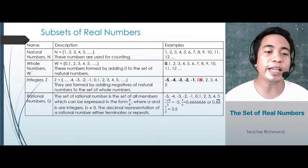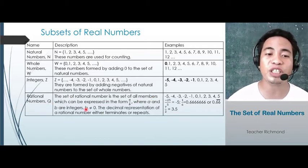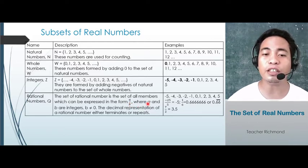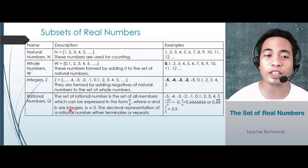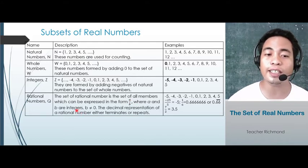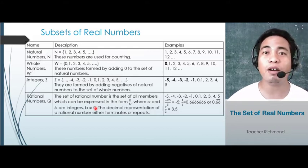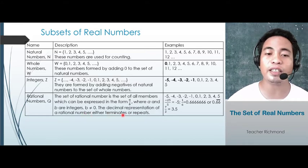The next one, we have rational numbers, oftentimes denoted as Q. The set of rational numbers is the set of all members which can be expressed in the form of a fraction, A over B, where the numerator A and the denominator B are integers. The denominator will not be 0, because any number divided by 0 is undefined. The decimal representation of a rational number either terminates or repeats.